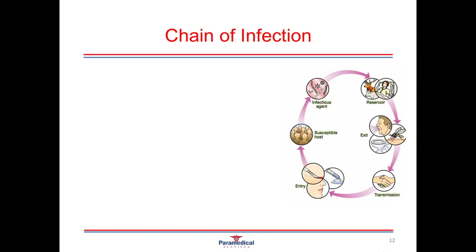Infections and diseases can only spread when the conditions are right — we call this set of conditions the chain of infection. There are six links to the chain of infection, and all of these need to be intact in order for the spread of infection to occur from one organism to another. The first is the pathogenic agent — examples include bacteria, viruses, fungi, or parasites — and this needs to be present in order for an infection to take place.